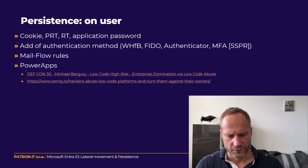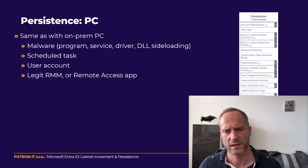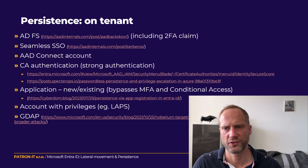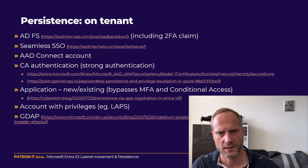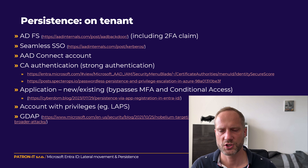For persistence on computers, it's more or less the same whether the computer is Entra ID-joined or on-premise — you can use malware, scheduled tasks, user accounts, or legitimate remote access applications like AnyDesk, TeamViewer, or VNC. For persistence at the tenant level, this can be done by creating fake AD Federation Services, Seamless Single Sign-On with the attacker's keys, an Azure AD Connect synchronization account, a custom certificate authority, or registering an application with high privileges.